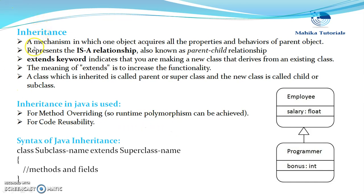Inheritance is a mechanism in which one object acquires all the properties and behaviors of a parent object. Simply, we can say it is a mechanism in which one class acquires the data members and methods of another class — that is, it is a mechanism of creating a new class from an existing class.